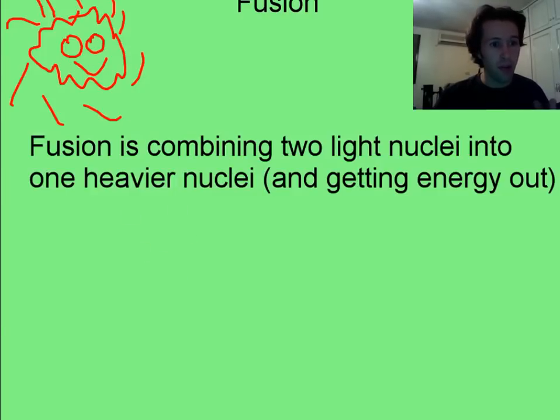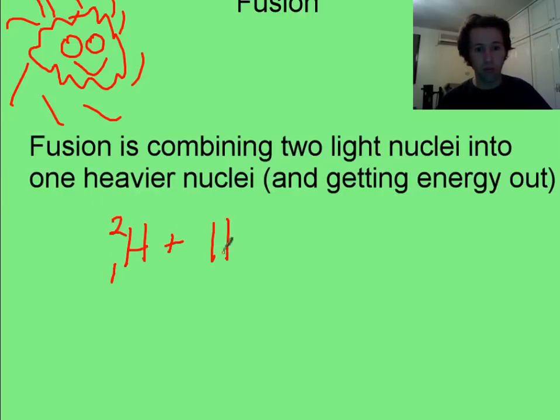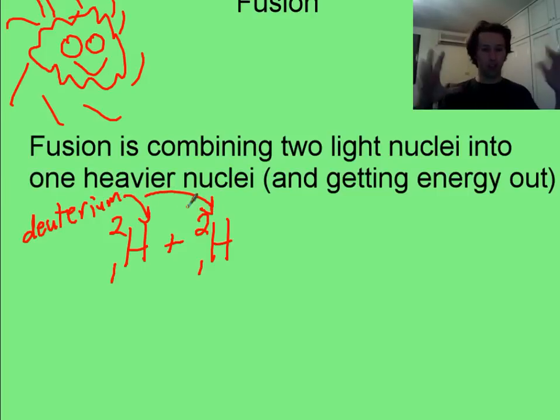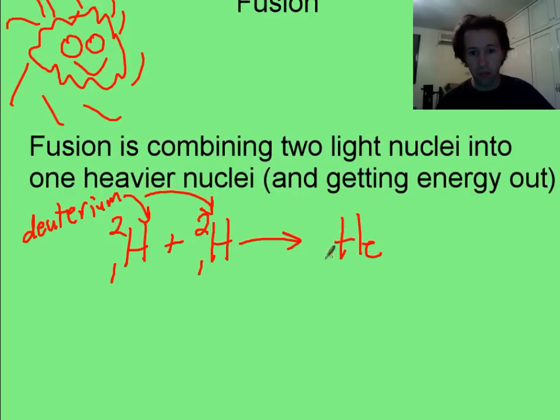So, an example of an equation in which that would work would be, let's say, you have two nuclei like this, hydrogen with a neutron in it. These would both be deuterium. You would need a lot of pressure and heat to get them to combine, but they would make helium, not normal helium, but this type of helium, and maybe an extra neutron.